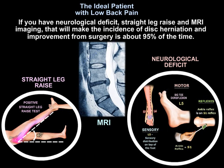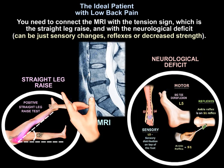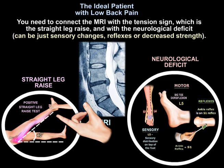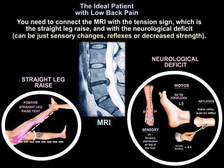If you have a neurological deficit, positive straight leg raise, and MRI imaging, the likelihood of disc herniation and improvement from surgery is about 95 percent. You need to connect the MRI with the tension sign — the straight leg raise — and with neurological deficit, which can be sensory changes, reflex changes, or decreased strength.